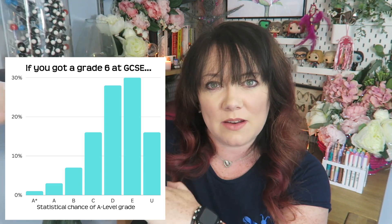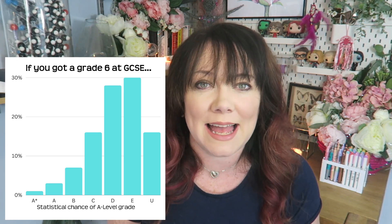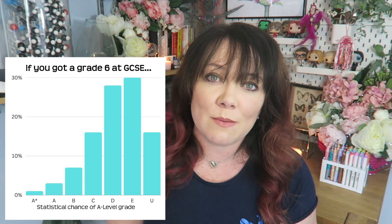If you got a grade six at GCSE, you can see you've got a pretty equal chance of getting a D or an E at A-level, followed by a C. People are getting B's, A's, and A stars — it does happen — but please remember, this is just based on a massive data set and doesn't talk about you as a person.